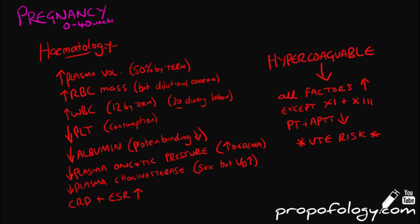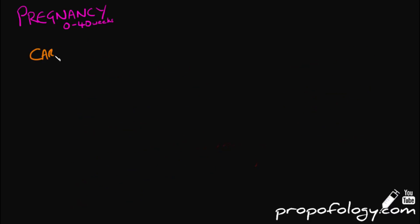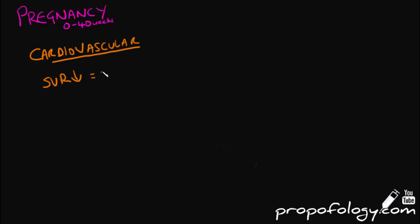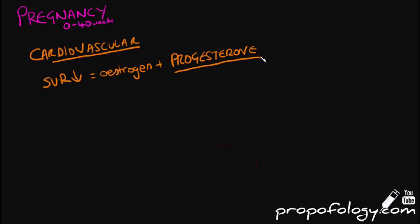Let's move on to the cardiovascular system. Systemic vascular resistance is reduced in pregnant ladies, and there's a reduction in diastolic blood pressure more than systolic blood pressure, leading to an increased pulse pressure. This is due to oestrogen and mostly progesterone.